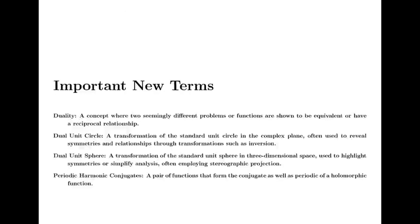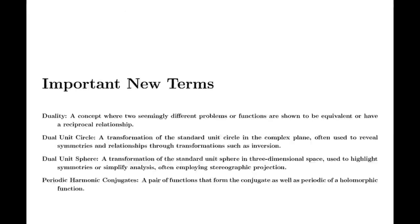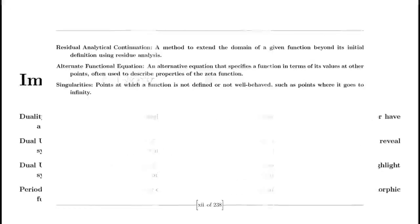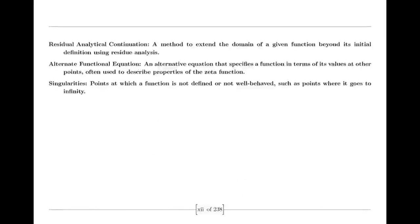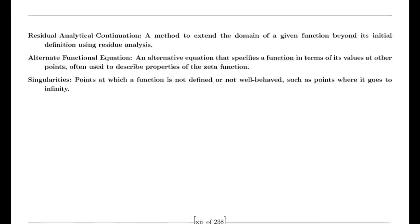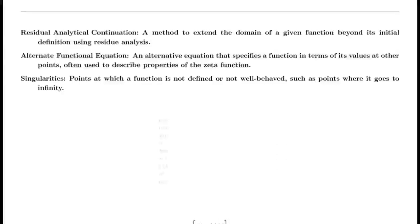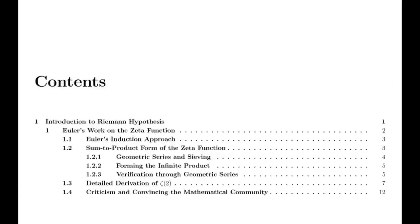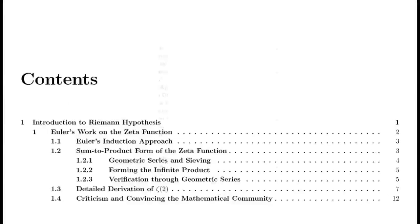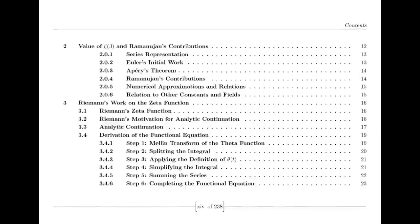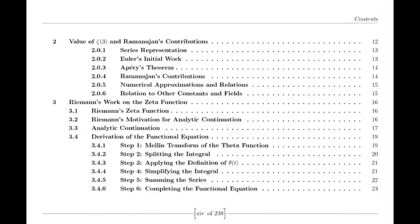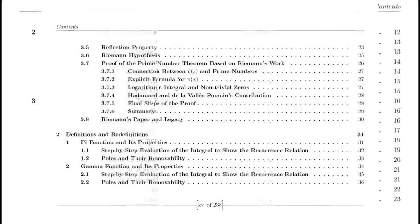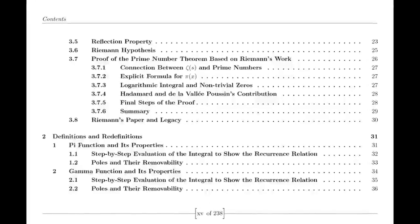Riemann's Analytical Machinery. Moving to the 19th century, we encounter Bernhard Riemann, who expanded our understanding of complex functions. Riemann introduced the concept of analytic continuation, which allowed for the extension of functions beyond their initial domains. For example, he extended the Riemann zeta function — initially defined only for complex numbers with real parts greater than 1 — to the entire complex plane except for s=1, where it has a simple pole. This was a crucial advancement in complex analysis.